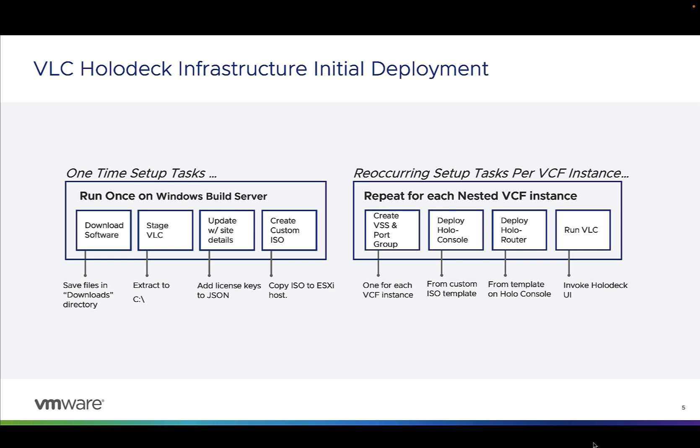Then you're going to deploy that hollow console, which gets deployed from that custom ISO that you built, and it's going to have everything you need to run the VLC and implement the nested VCF labs. You'll then deploy the hollow router, which provides external network connectivity. Once those are deployed, you RDP into that hollow console and run VLC. That's going to invoke a UI and you just follow the prompts to point to the configuration files, provide your necessary settings, and it will go out and create your nested VCF labs.